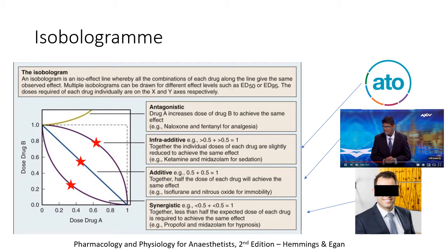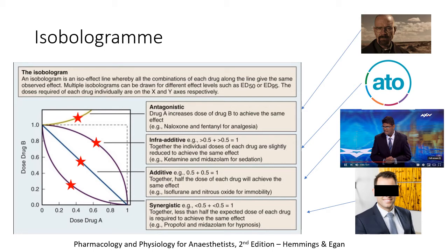An antagonistic function would be, for example, getting caught as a drug dealer. I have one clean dollar in one hand and one drug money dollar in the other hand, but not only does the drug money not earn me anything once I get caught, it also results in the clean dollar being confiscated. Note that many sources confuse infra-additive and antagonistic functions, even generally reputable ones.